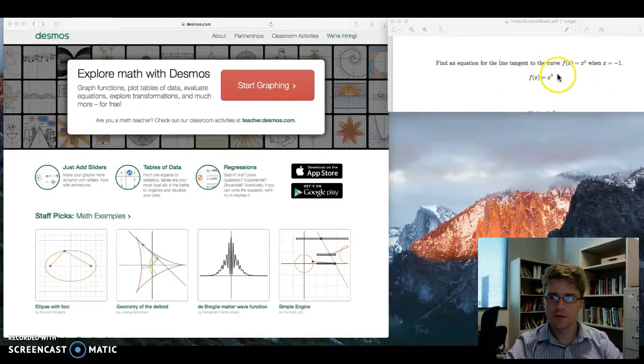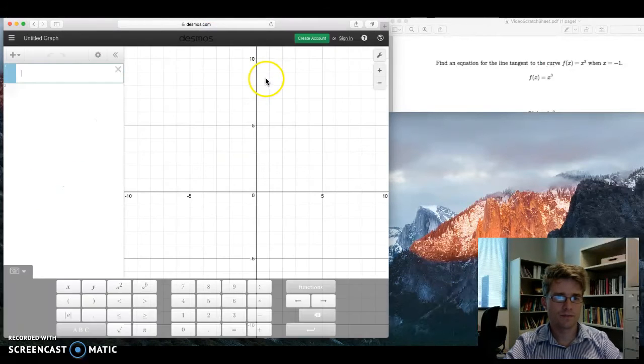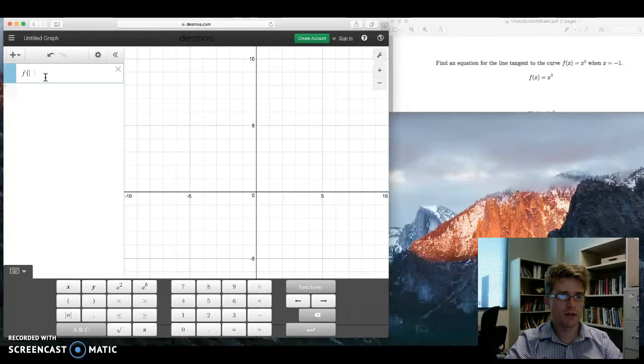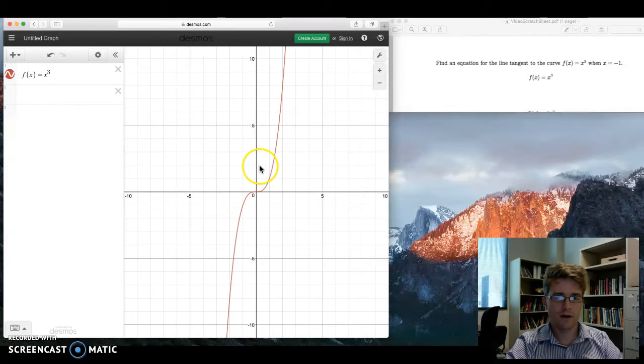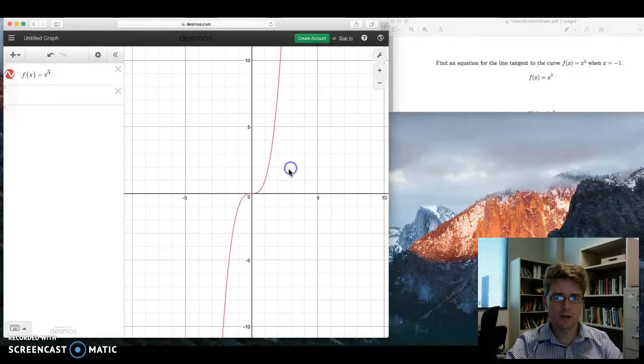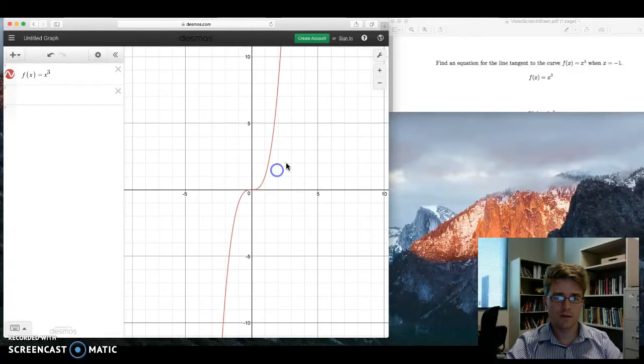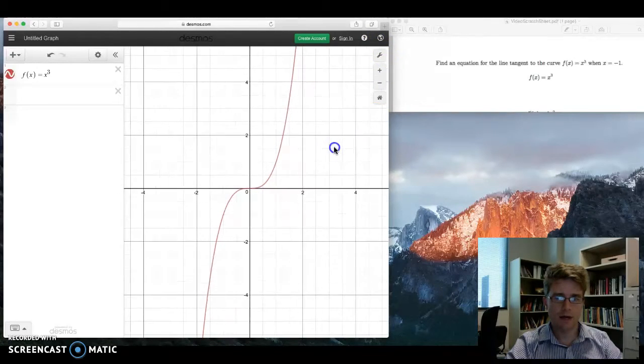So this is our function we're dealing with, f of x equals x cubed. Let's go ahead and start graphing with Desmos here. We'll go ahead and punch in f of x equals x cubed, and that gives us our beautiful graph here. You'll notice in Desmos you can drag it around, you can change the window settings if you want. Up here, the graph settings, you can zoom in, you can zoom out. It's a good program.